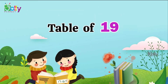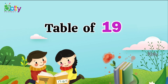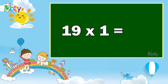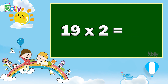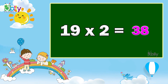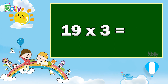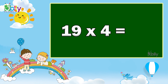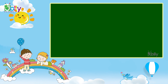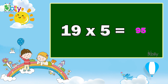Table of 19. 19 1s are 19. 19 2s are 38. 19 3s are 57. 19 4s are 76. 19 5s are 95.